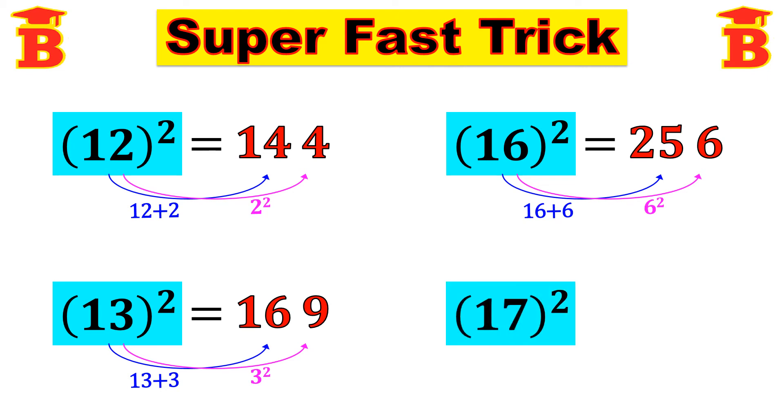Same like that we can square 17. So 17 square equal to, same procedure. First square the last digit i.e. 7 square. 7 square is 49. So write 9 and take carry 4.